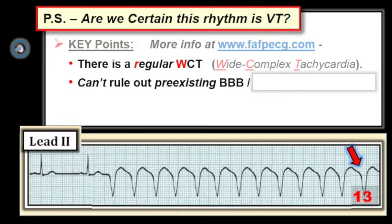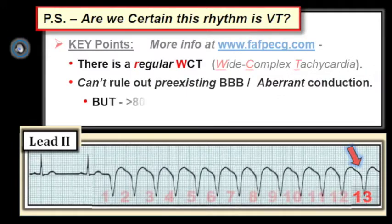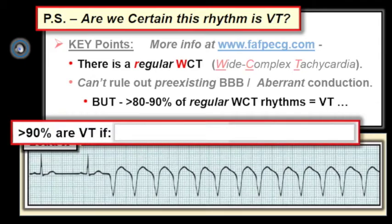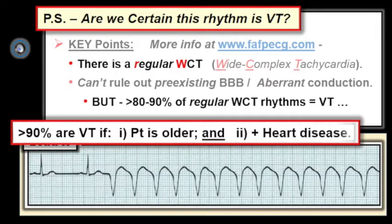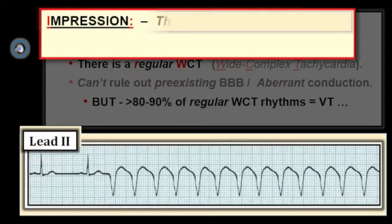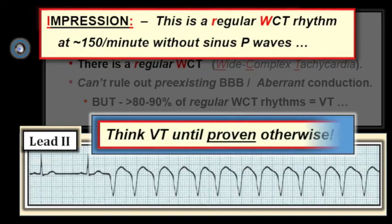While true that we cannot completely rule out a supraventricular etiology for this regular wide rhythm — such as pre-existing bundle branch block or SVT with aberrant conduction — at least 80 to 90 percent of regular WCT rhythms you will see when sinus P waves are absent will turn out to be VT. This goes up to well over 90 percent if the patient is older than a young adult and has underlying heart disease. Therefore, we should call it VT until proven otherwise and treat the patient accordingly.